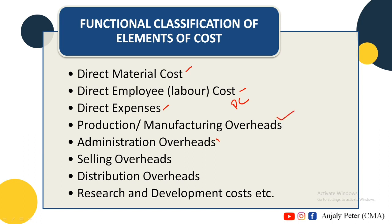Next we have General Administration Overhead — for example, office staff salary, printing and stationery expenses, telephone expenses, and administration expenses. Then Selling Overhead covers sales commission and selling overhead items.